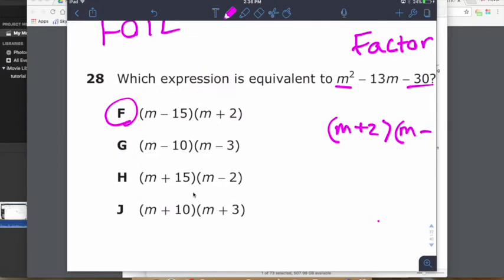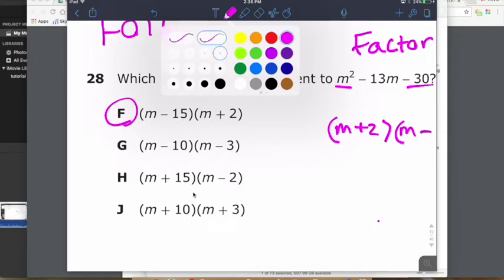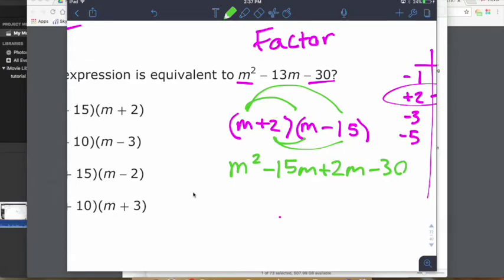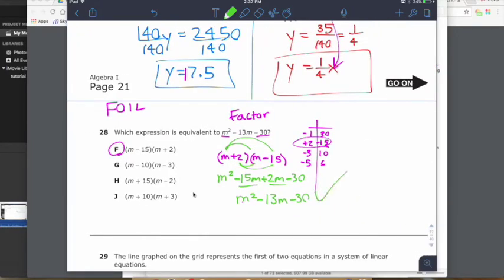If you wanted to go back and double check, you could FOIL this thing back together. First times first, M times M is M squared. Outside times outside, negative 15M. Inside times inside, that's 2M. Last times last, 2 times negative 15 is negative 30. Then combine your like terms. And you're done. That checks right there. That's kind of like the checking your work part. But so the big thing on this one is we're going to factor.